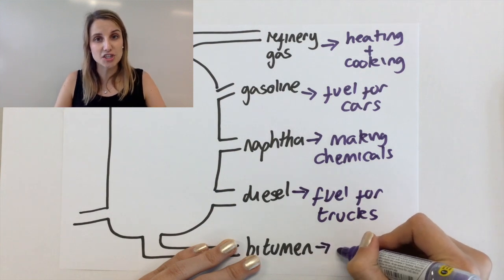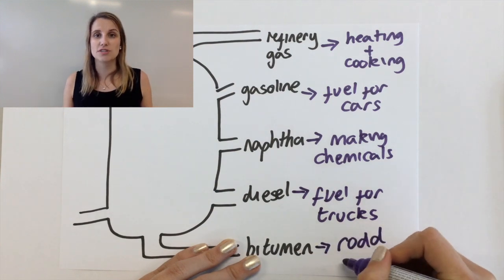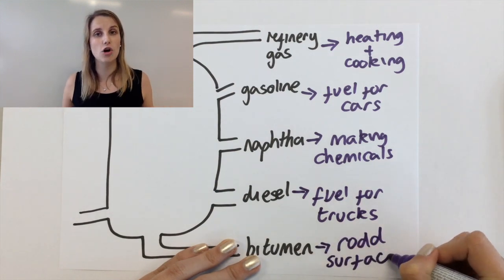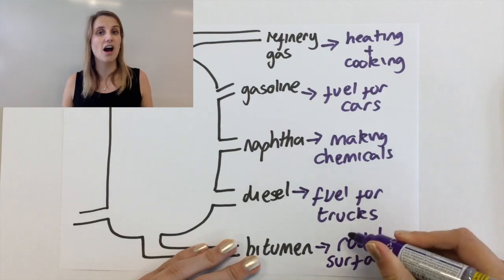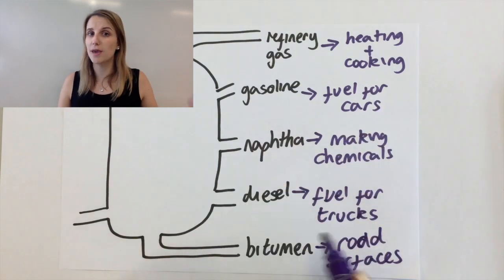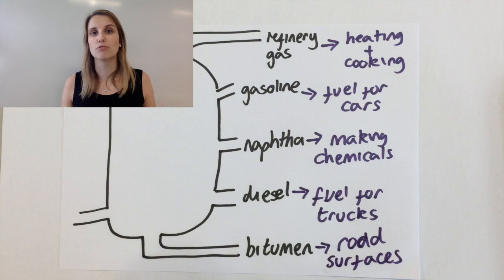And lastly, the use of bitumen is for road surfaces, so those really long hydrocarbons with very high viscosity, very gloopy, we can use to cover our roads and we know won't melt easily.